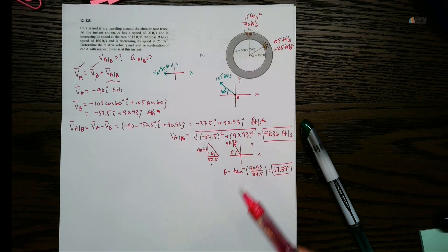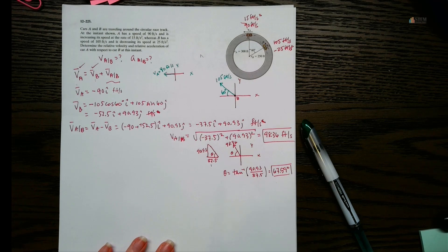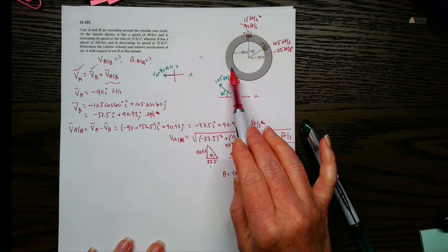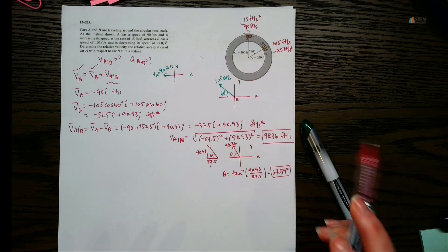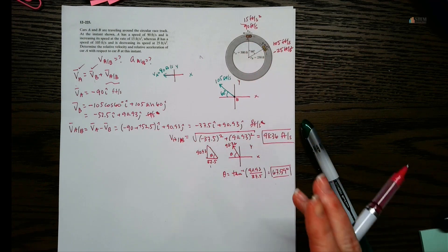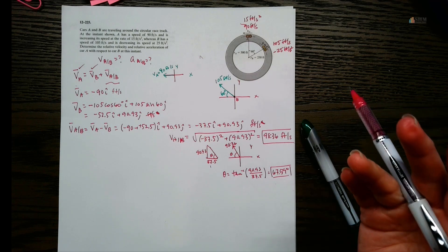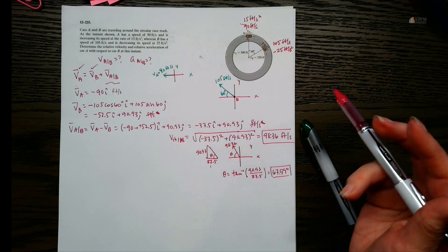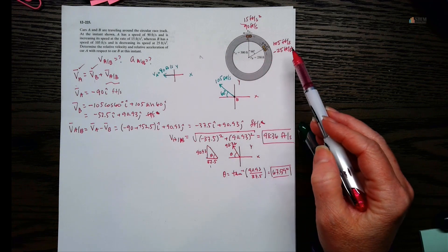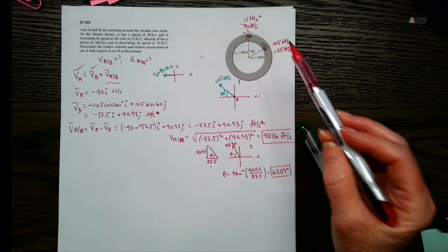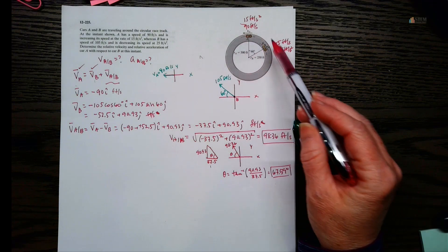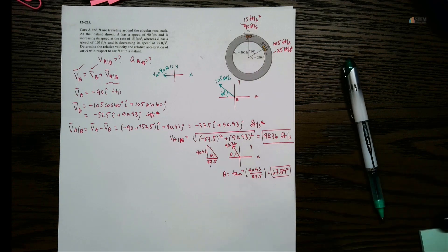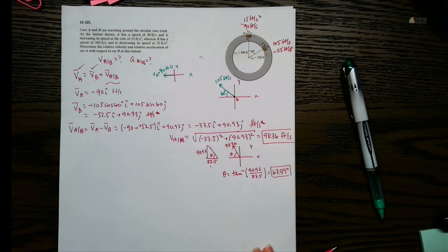That takes care of velocity. Now for acceleration, you have to pay attention to the path. We have a circular path, so each car has two components of acceleration: a tangential acceleration and a normal acceleration. The tangential acceleration is the acceleration or deceleration of the cars themselves. The normal acceleration is due to the curvature of the path.